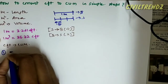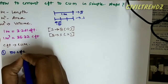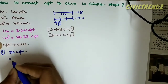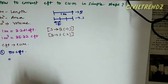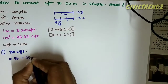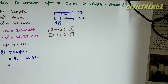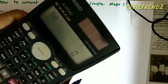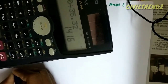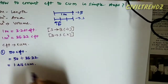Example: 50 cubic feet — we will convert 50 cubic feet to cubic meter. Since cubic feet is the small unit and cubic meter is the big unit, we divide. 50 divided by 35.32 equals 1.416 cubic meter.